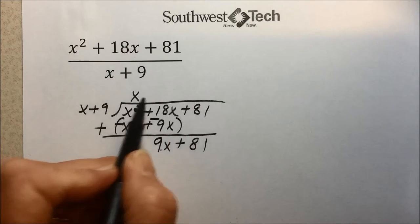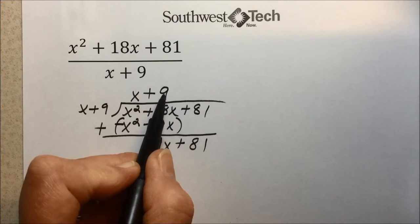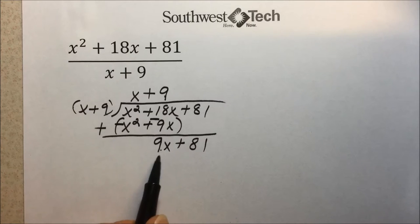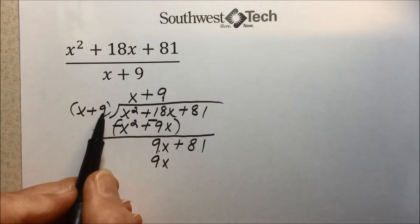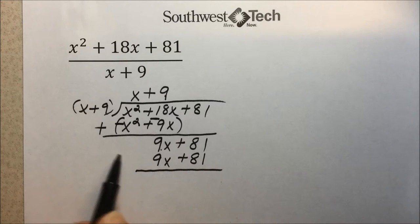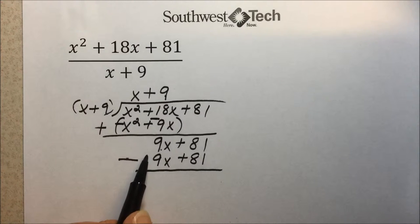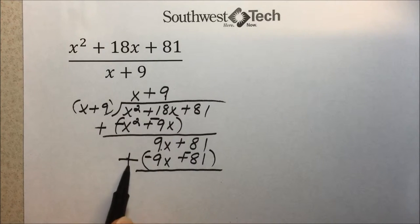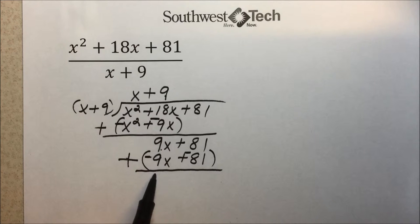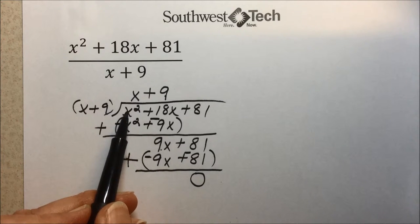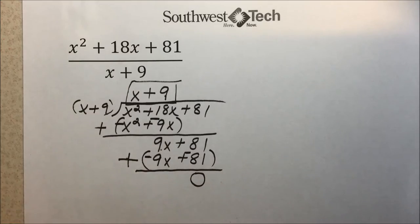what times x gives you a 9x? We have the x, but we need a positive 9. So we will multiply by 9. 9, this new quantity, times our divisor. 9 times x is 9x. Distributively, we also have to take 9 times 9. Think of this like a two-digit number. 9 times 9 is 81. We're now ready to subtract, and instead of subtract, I'm going to use the rule for subtraction, which says change the signs and add. 9x plus a negative 9x cancels out, and 81 plus a negative 81 cancels out. In other words, x plus 9 went in evenly with no remainder, and our quotient and answer to this problem is x plus 9.